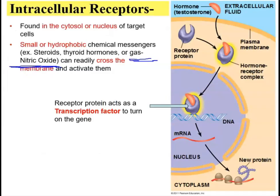The next category is intracellular receptors, found in the cytosol or the nucleus. Hormones are small, hydrophobic, and nonpolar, so they can diffuse directly through the phospholipid bilayer — that is why their receptors are found within the cytoplasm or even the nucleus. The hormone diffuses through the membrane, binds to the receptor protein to form a hormone-receptor complex, and this complex moves into the nucleus. The receptor has a DNA-binding domain that recognizes a specific gene, binds to it, and initiates transcription by recruiting other proteins.